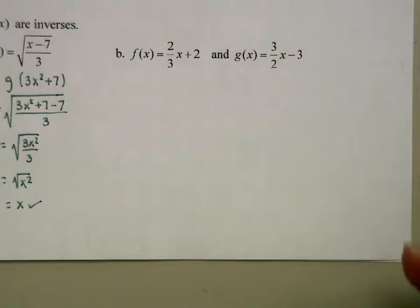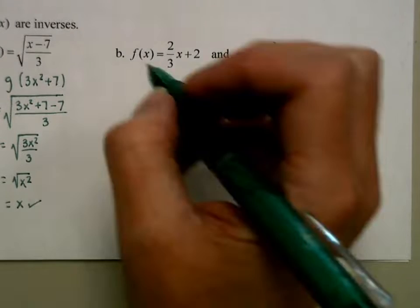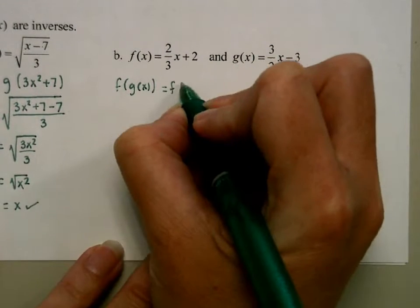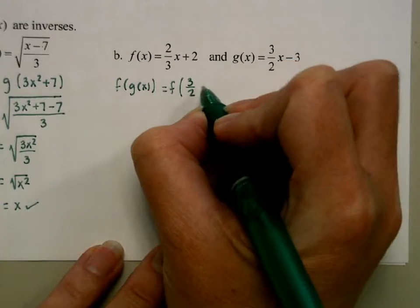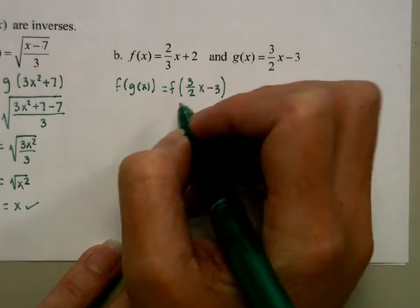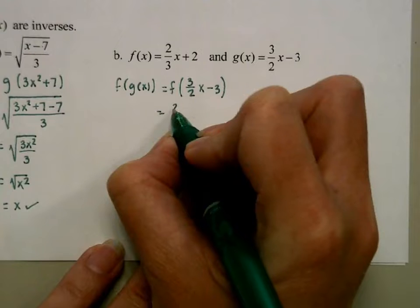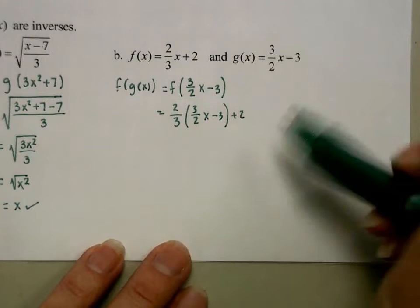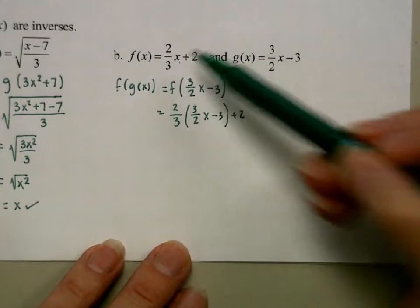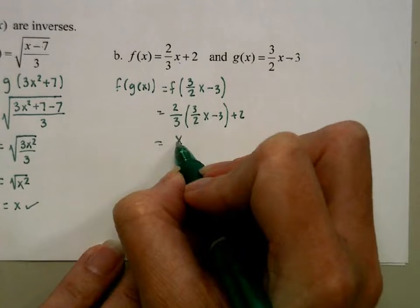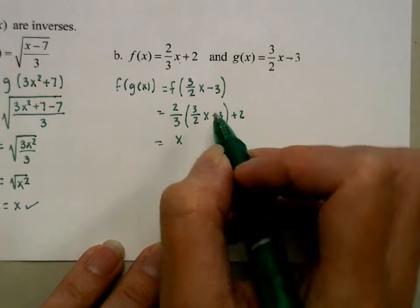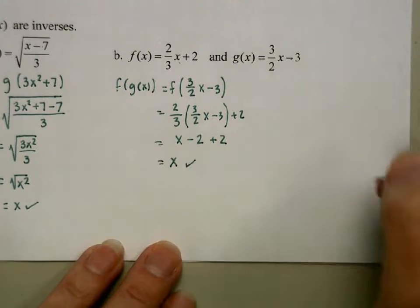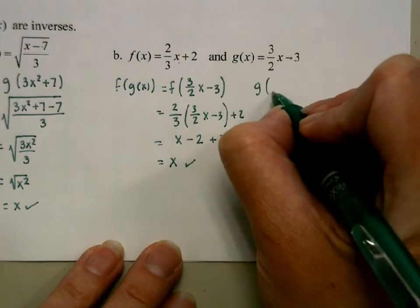We'll do this again with our new equations. We take that equation, stick it in for the f here. When I distribute, this becomes 2/3 times 3 is 2. And we get out x. So half verified.